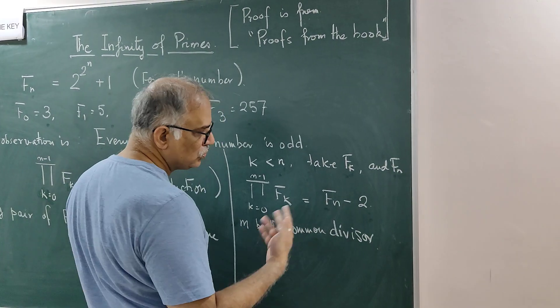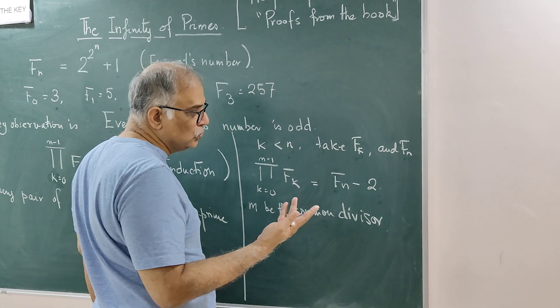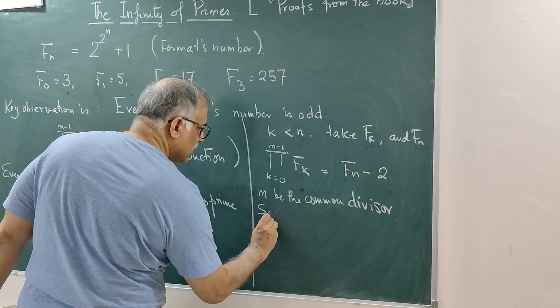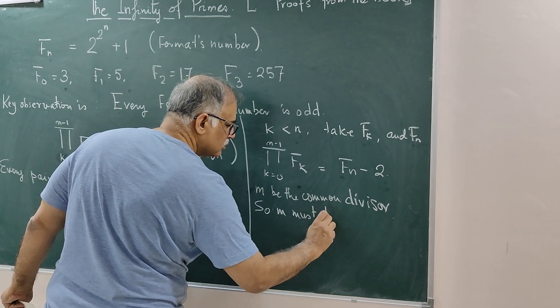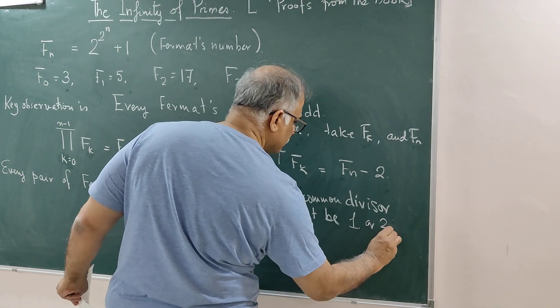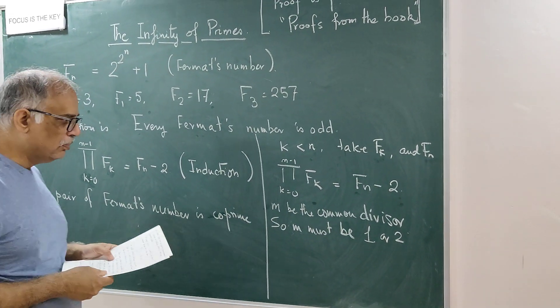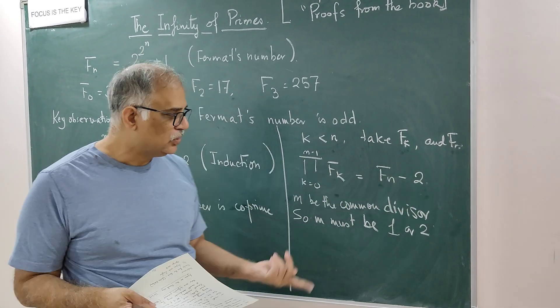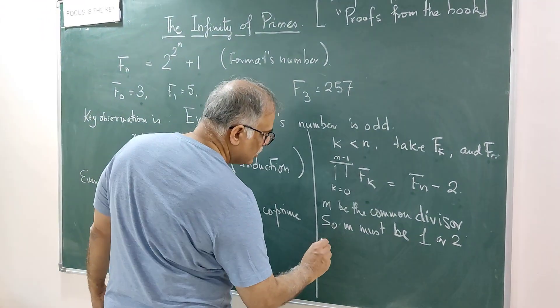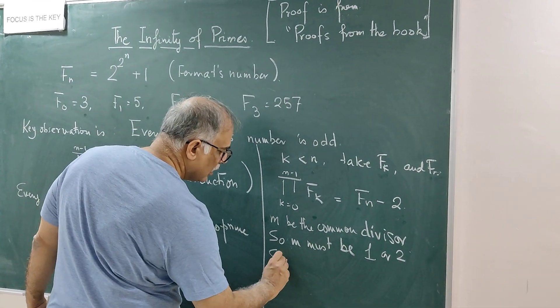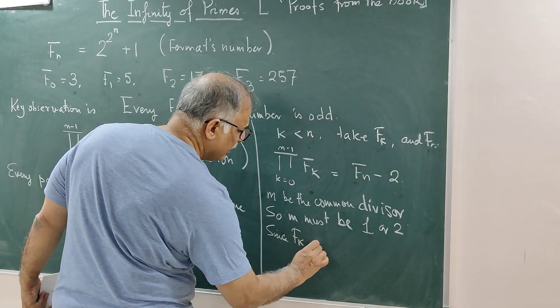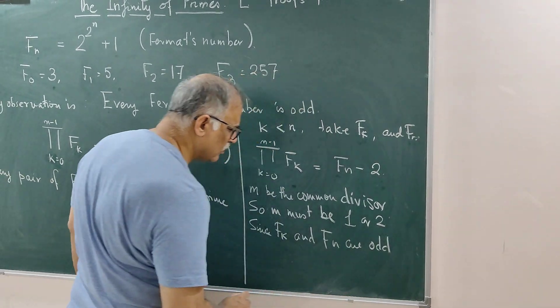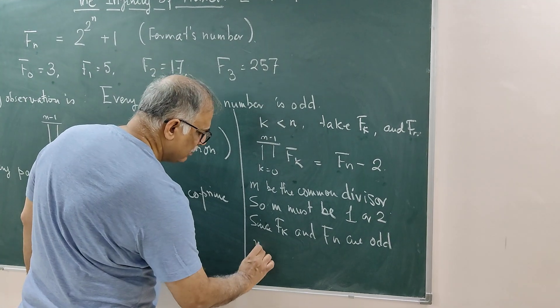So who can be the divisors of 2? Either 1 or 2, nothing else. So m must be 1 or 2. But as F_k and F_n are both odd, they cannot be divided by 2. So they must have common factor 1. Since F_k and F_n are odd, m is equal to 1.